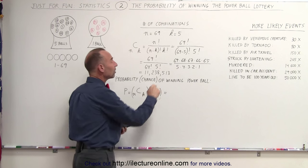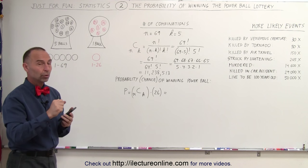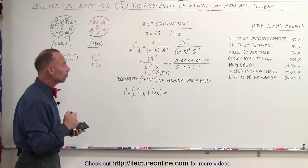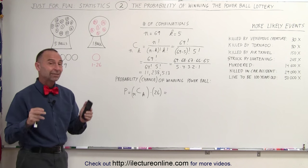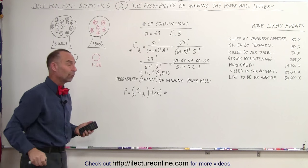That is your chance of getting all 5 numbers correct. You have 1 ticket, there's 1 out of 11 million, 238,513 chance you get the 5 correct numbers. But then you still need to get one of the red ball numbers correct.